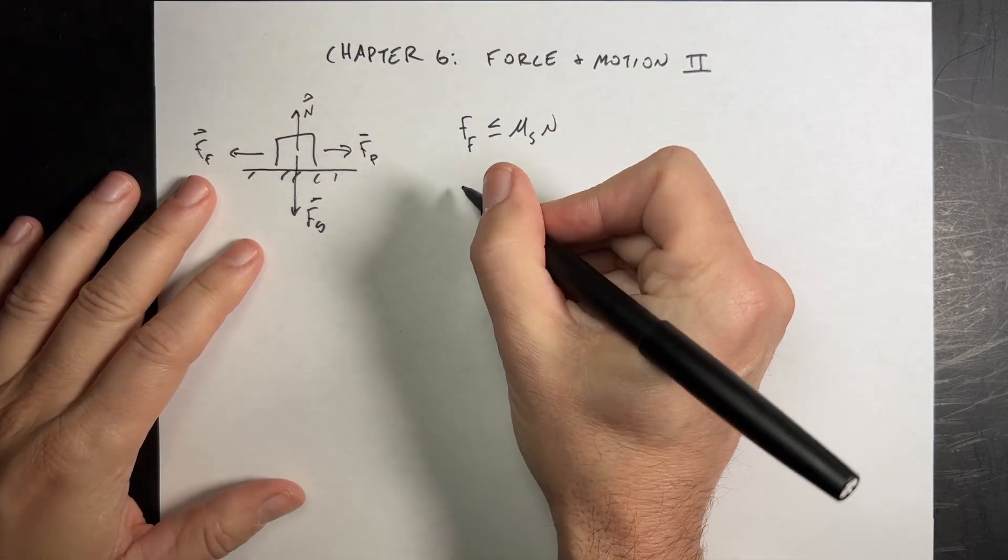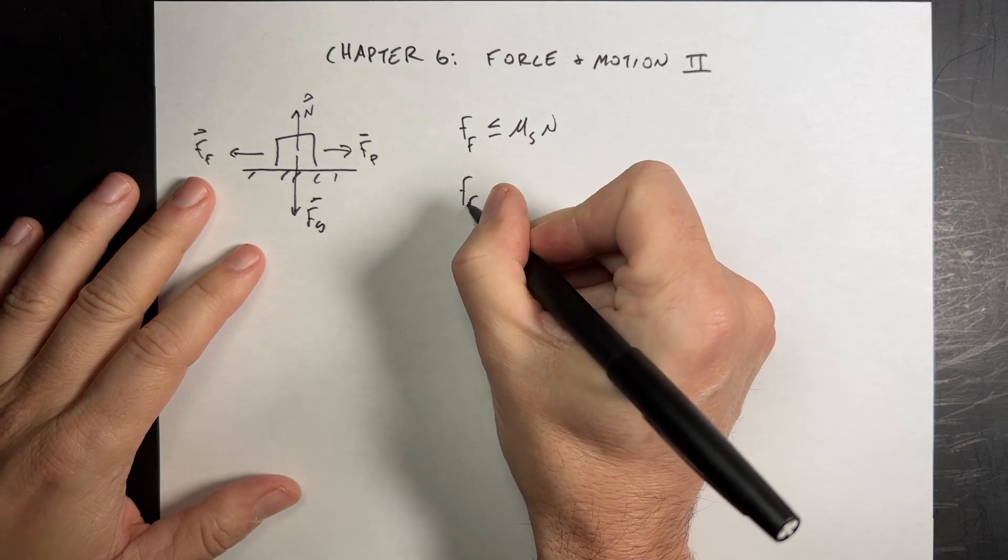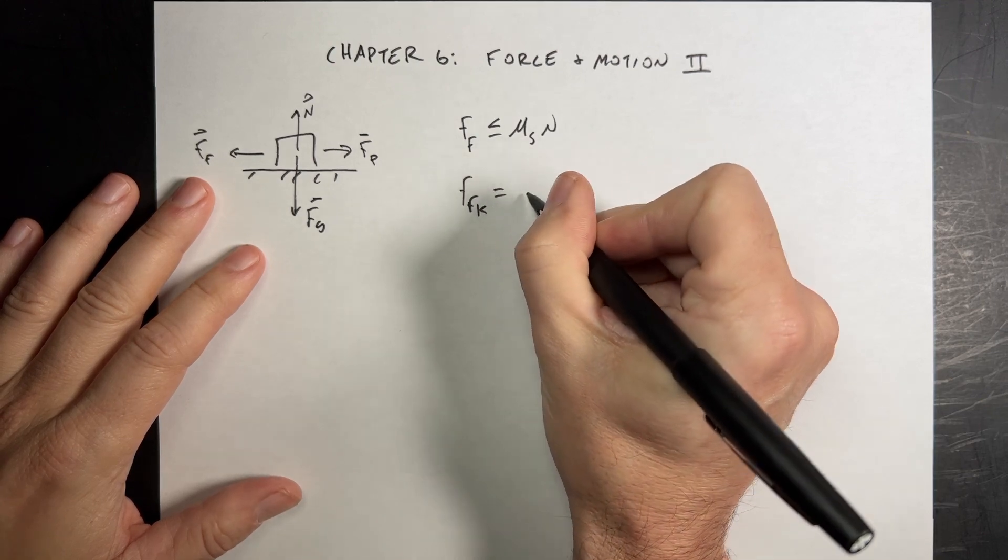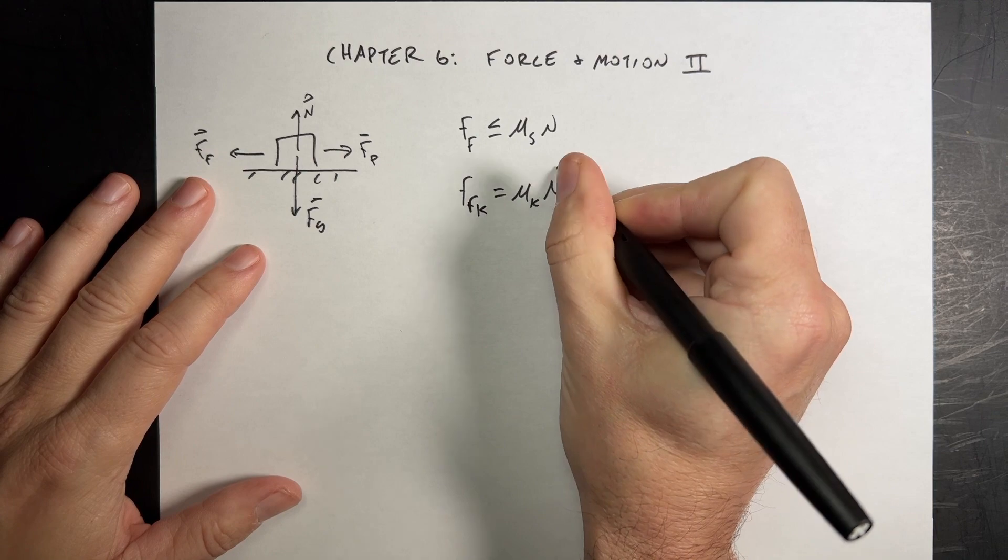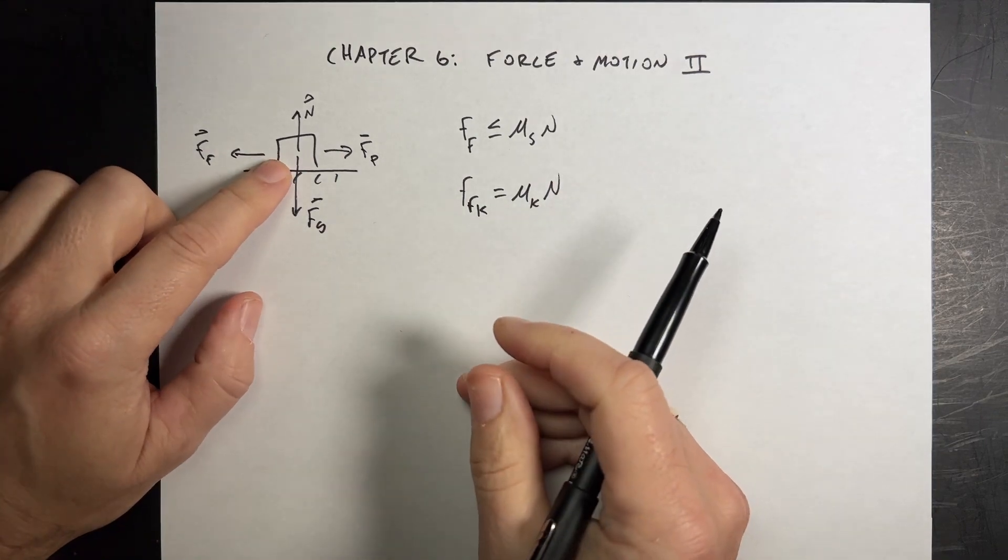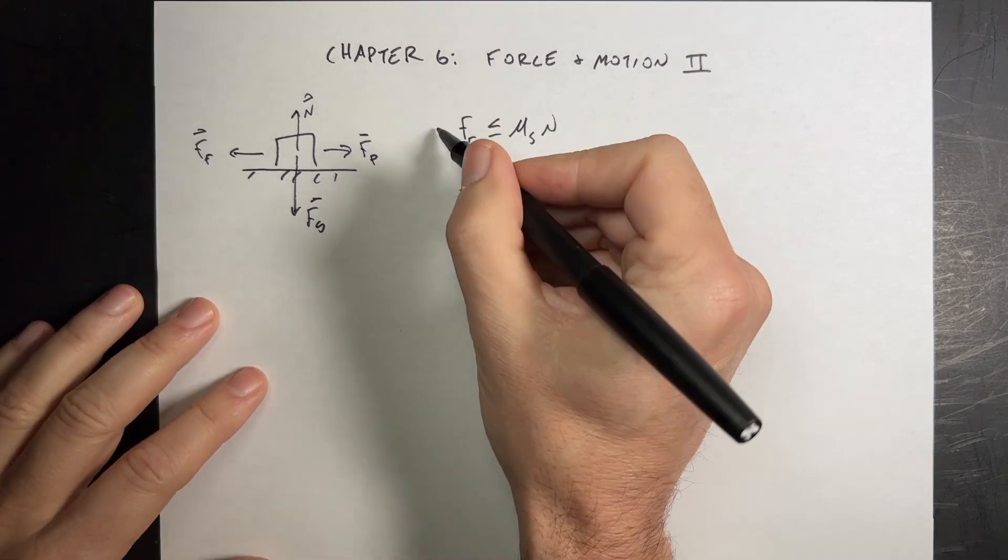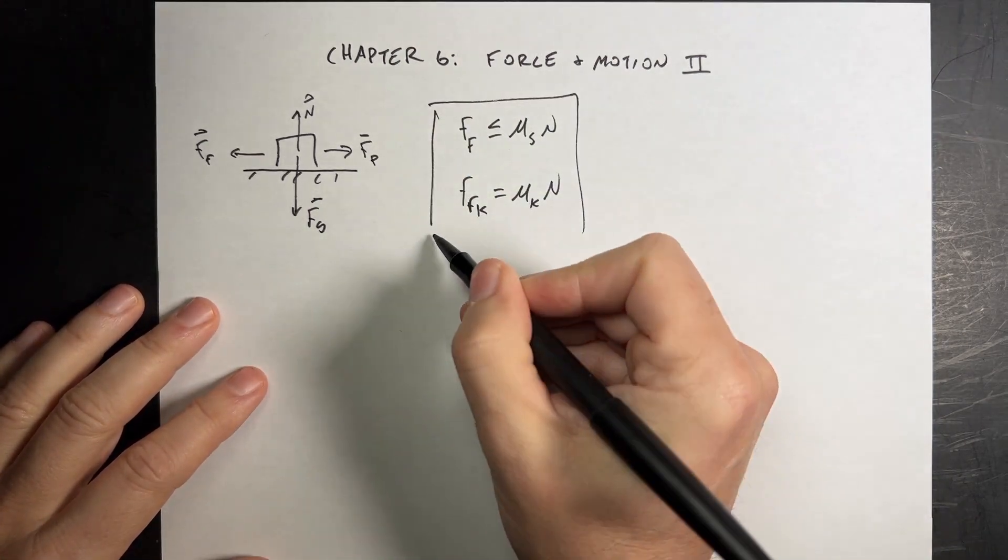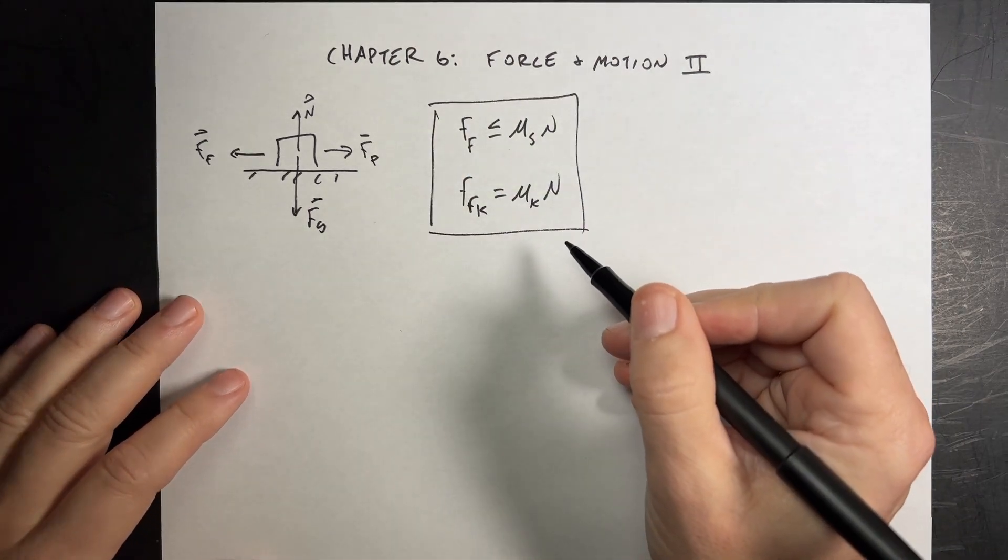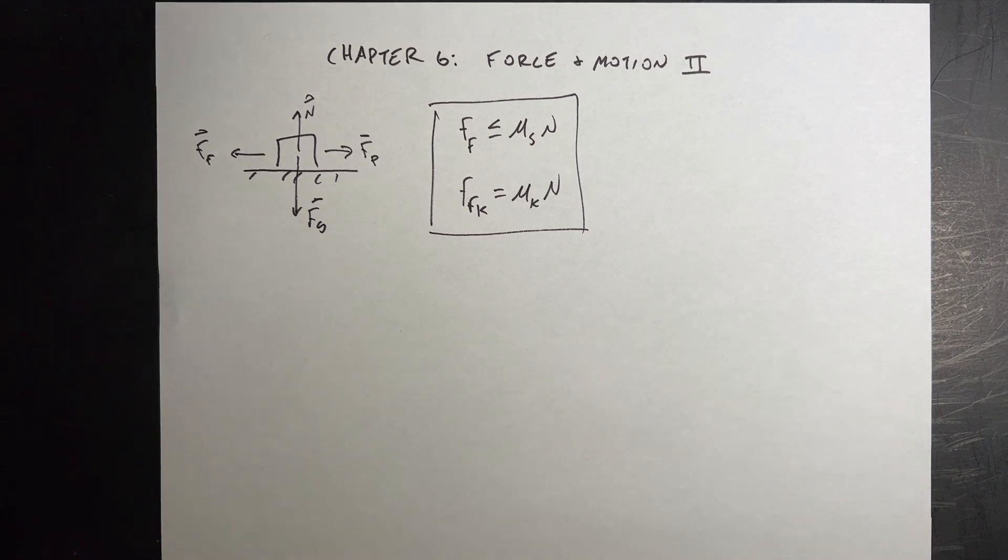Once you get it sliding, then we have a different, I'll call this FFK, equals mu K times the normal force. So if the two surfaces are sliding relative to each other, then the frictional force is constant. And this is just a model, right? There are ways you can break this. It doesn't always work, but it works for everything probably that you'll do in this course.